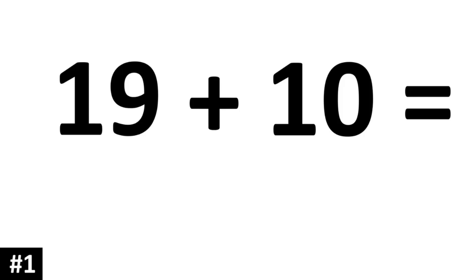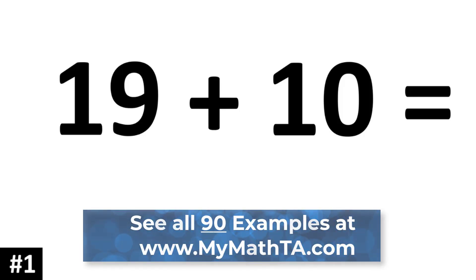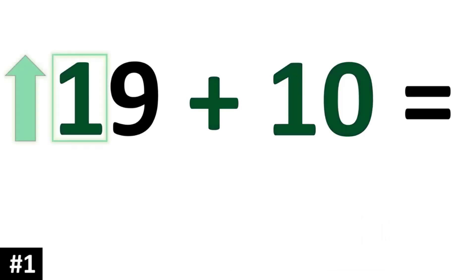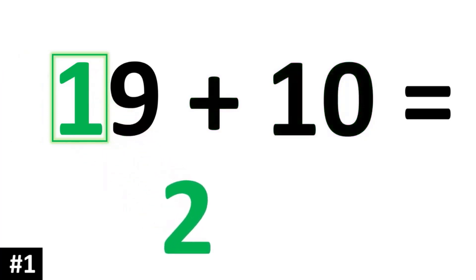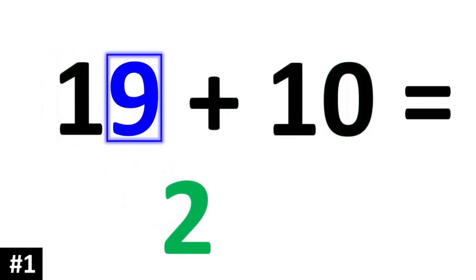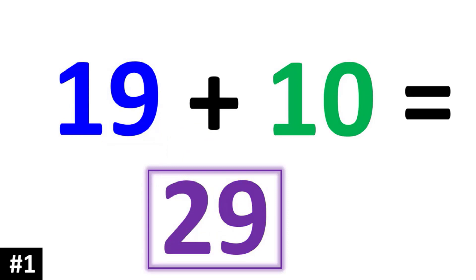Here's how we do it. 19 plus 10: all that means is that the tens digit of 19, which in this case is a 1, is going to go up by 1, so that 1 is going to become a 2. And the ones digit, which is a 9, stays the same. So we're going to have a 2 and 9, or 29. So 19 plus 10 is 29.